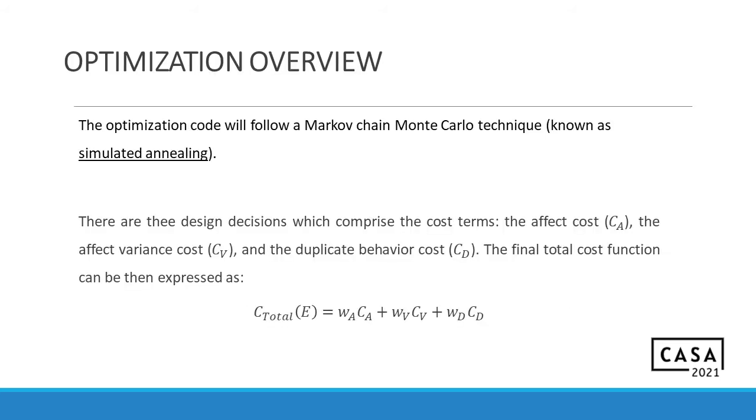Now let's talk about optimization. Once we have this database built up, we know of how each behavior ranks from a scale of 0 to 1. We followed a Markov Chain Monte Carlo technique. It was called simulated annealing. And basically, we developed three cost terms that we fed into the algorithm for it to work and give us the optimized solution. The three cost terms were affect cost, affect variance cost, and duplicate behavior cost.